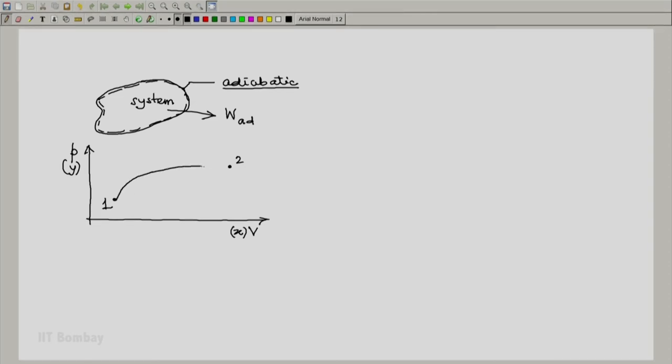For example, one process could be like this. This is a quasi-static adiabatic process. Another quasi-static adiabatic process could be like this. A third non-quasi-static adiabatic process could be like this. This is just a representation, the path doesn't matter.